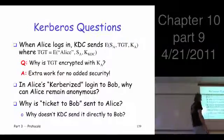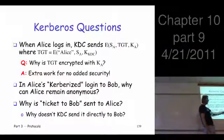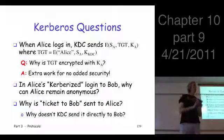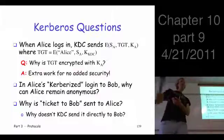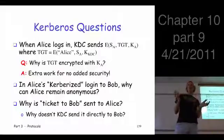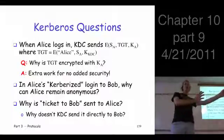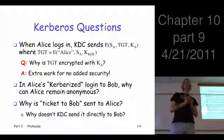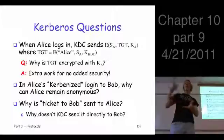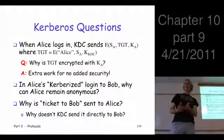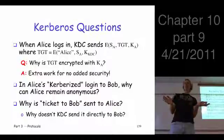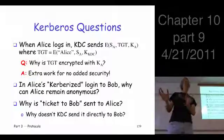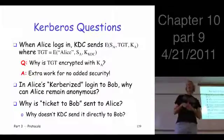Here's a good question, too. So why is this Ticket to Bob sent to Alice? In other words, Alice says, I want to talk to Bob. What does the KDC do? It creates a Ticket to Bob, sends it to Alice. Now, what does Alice do with that? Sends it to Bob. That's two messages. Why couldn't the KDC just send it directly to Bob? That's one message. Obviously, the people who designed Kerberos were worried about efficiency because they used timestamps. So why not reduce a message and just send that directly to Bob?